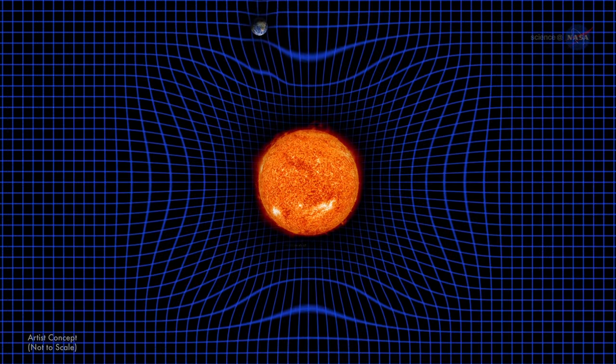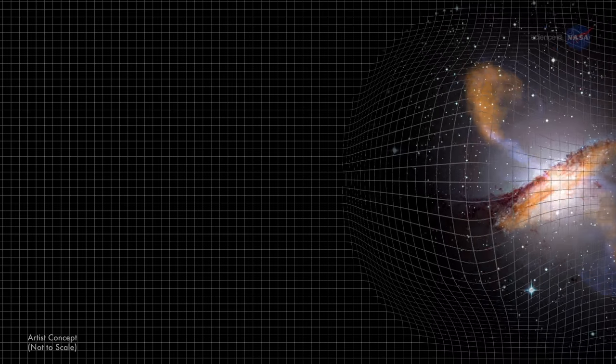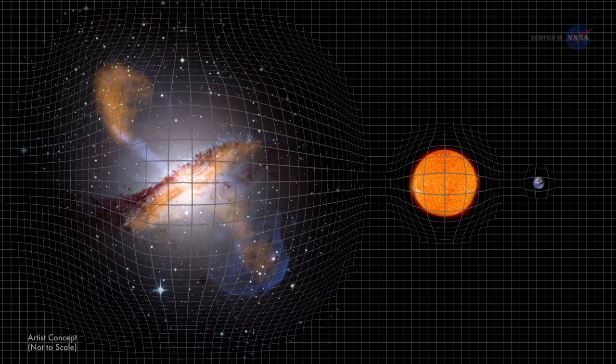Remember the physics analogy of the trampoline with a bowling ball in the middle? Like that ball, which gently distorts the trampoline's canvas, the Sun warps the smooth canvas of spacetime enough to make planets move in curved orbits. A whole galaxy warps spacetime much more. The more massive the body, the more warping.